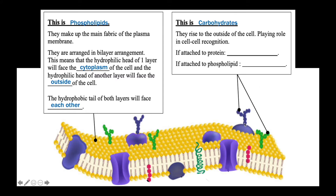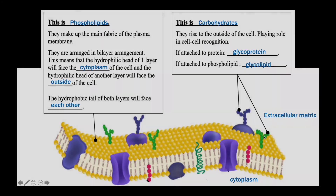Since the carbohydrate chains arise to this side of the plasma membrane, we can safely say that this side is the extracellular matrix, and hence this side is the cytoplasm of the cell. When attached to membrane proteins, the carbohydrate is known as glycoprotein. However, if it is attached to the phospholipid, it is known as glycolipid.